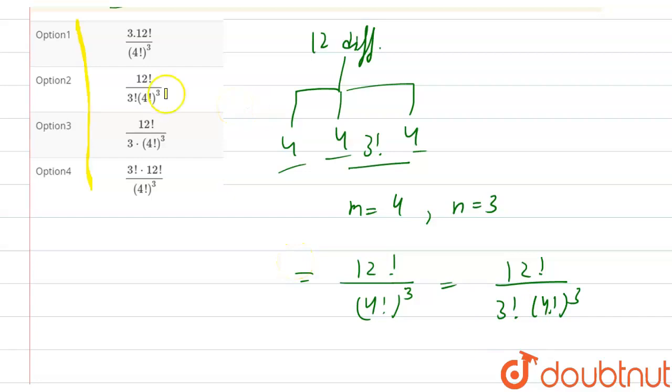So our answer is twelve factorial divided by three factorial into four factorial raised to the power three. So according to this, option two is the right option. So the answer for this question is option two.